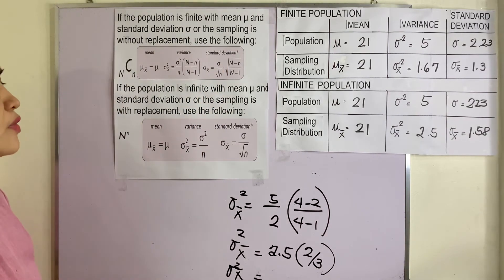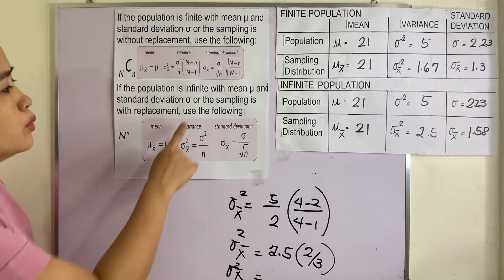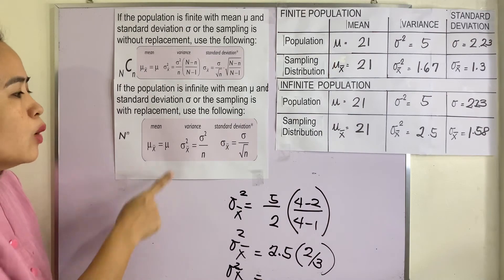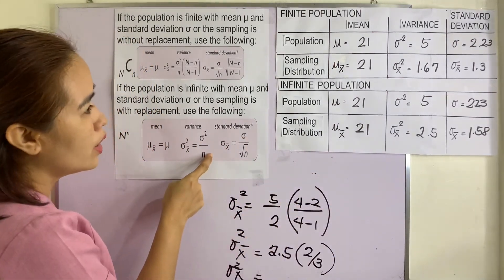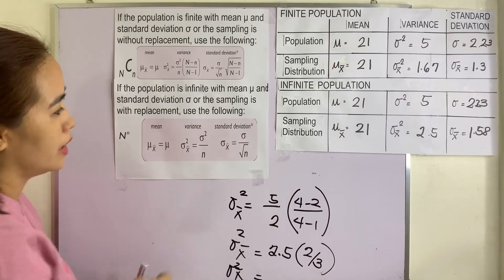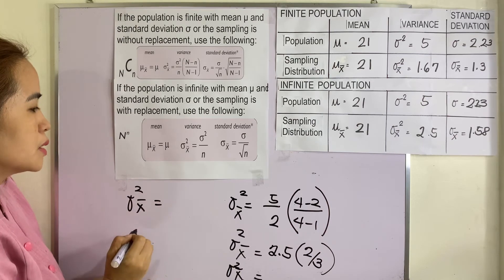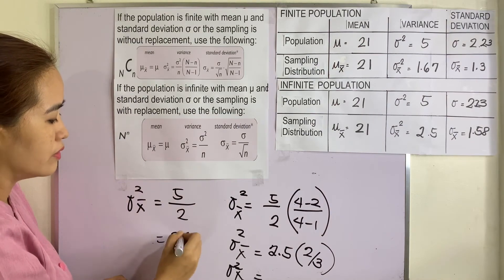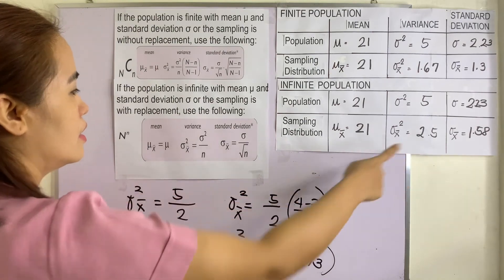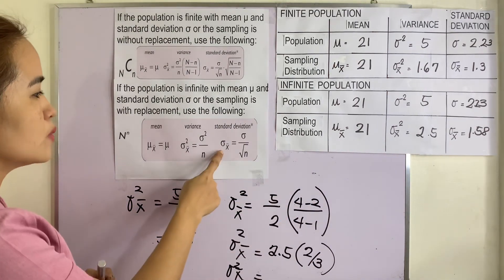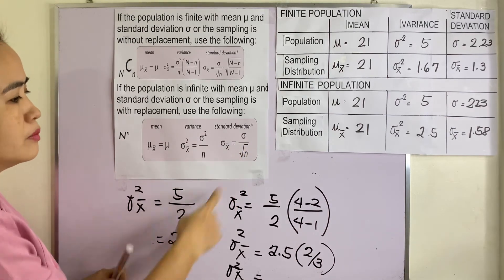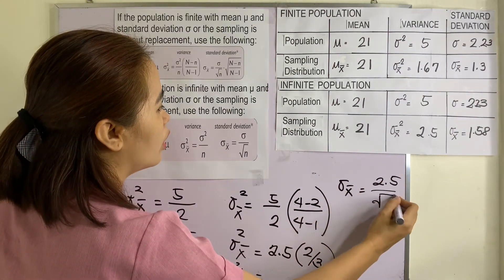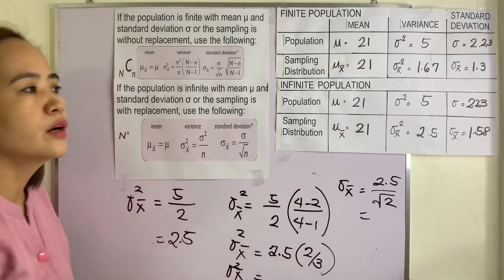If the population is infinite with mean mu and standard deviation sigma, or sampling is with replacement, the mean still equals the population mean. The variance is simply the population variance divided by n, which is 5 divided by 2 equals 2.5. The standard deviation is the square root of 2.5 divided by the square root of 2, giving approximately 1.58.